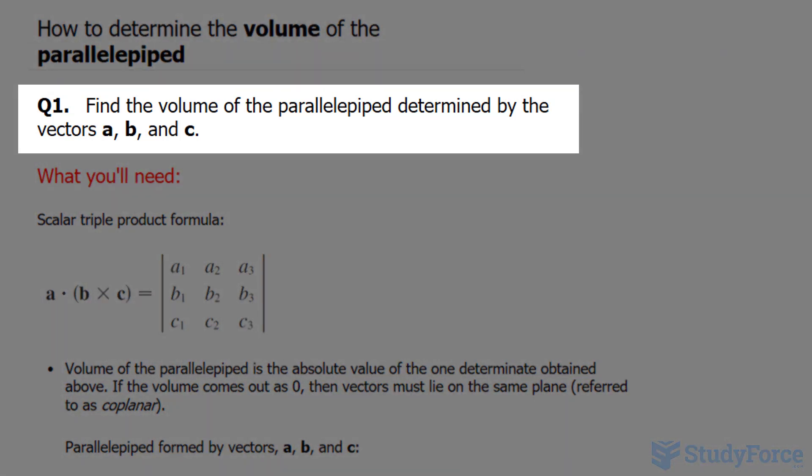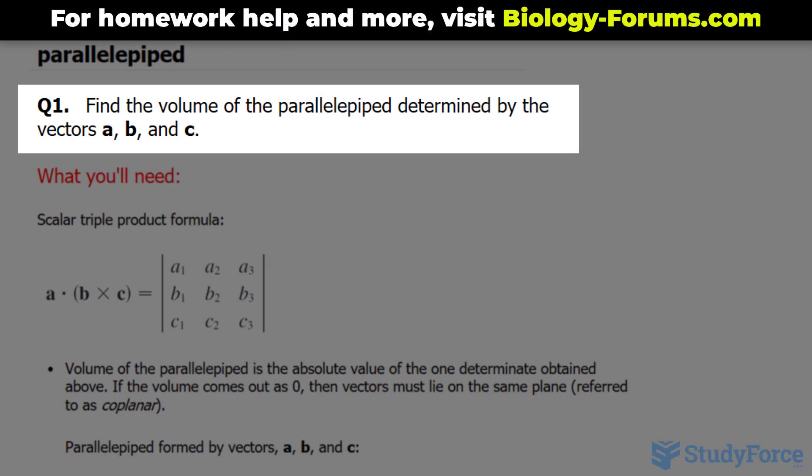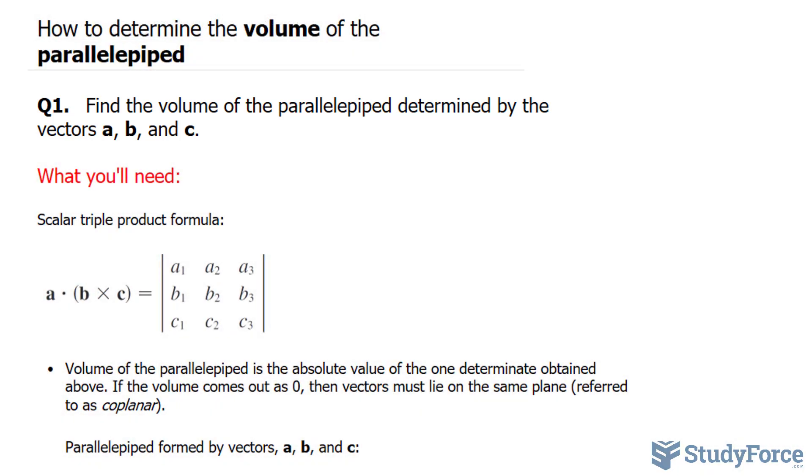The first of two questions reads, find the volume of the parallelepiped determined by the vectors a, b, and c. And we'll assign the components of these vectors in a moment.